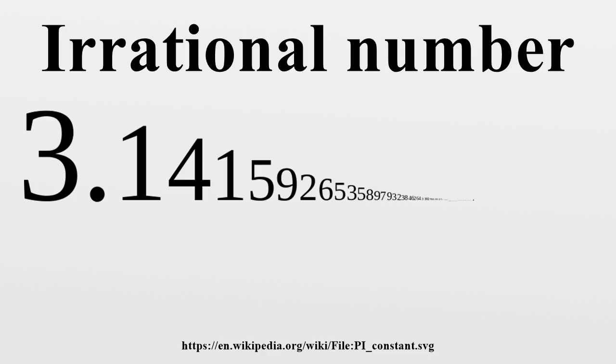Because the algebraic numbers form a field, many irrational numbers can be constructed by combining transcendental and algebraic numbers. For example, 3 pi plus 2, pi plus square root 2, and e to the square root 3 are irrational.